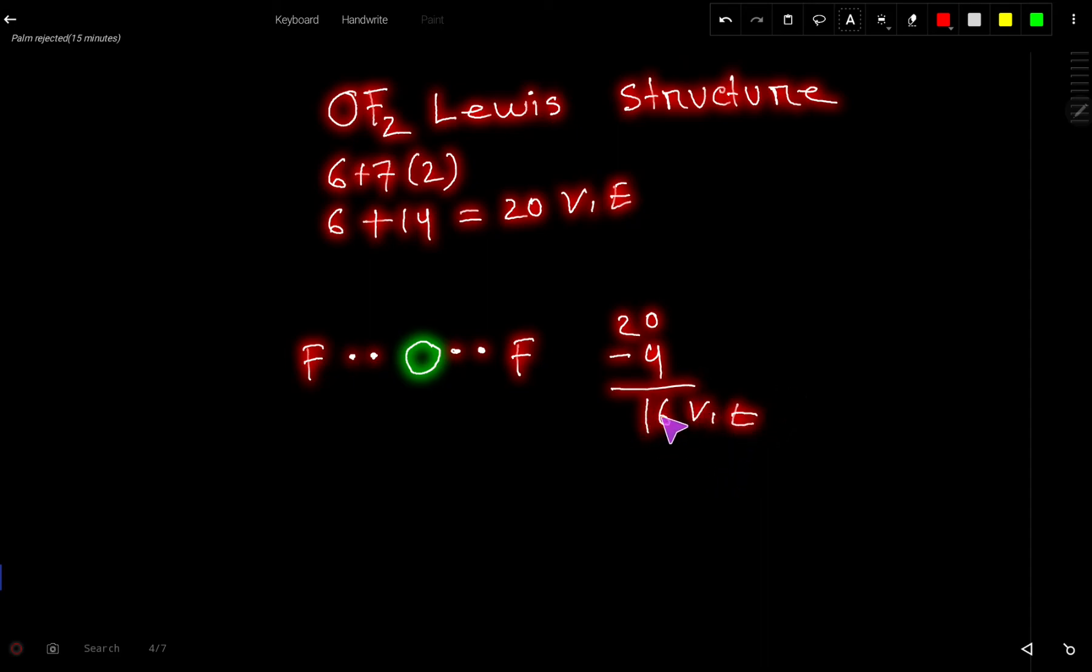So these 16 valence electrons will be used to satisfy the octet for fluorine and oxygen. We have to first satisfy the octet for the outer atom. So let us satisfy the octet for this fluorine. This fluorine already has 2, so it will take a maximum of 6 more. So we have 10 valence electrons left.